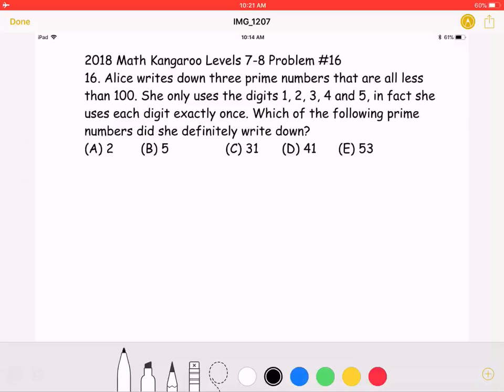This is the 2018 Math Kangaroo Level 7-8 Problem No. 16. Alice writes down three prime numbers that are all less than 100.